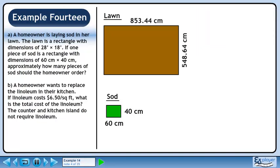We write the sides of the lawn in centimeters. The formula for the area of a rectangle is A equals LW. Plug in the length and width of the lawn. The area is 468,231.32 square centimeters.